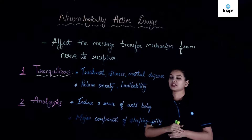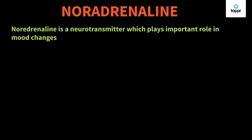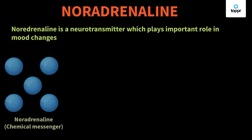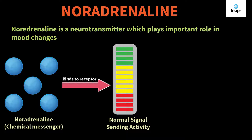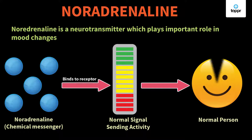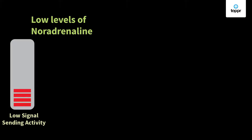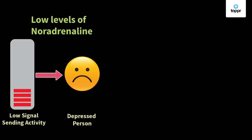Let's see how these tranquilizers work by discussing noradrenaline. Noradrenaline is a neurotransmitter which plays a very important role in mood changes. It acts as a chemical messenger — it binds to a receptor and shows signal-sending activity. Due to these signals, our mood remains normal. If the level of noradrenaline falls down, the signal-sending activity also lowers and the person suffers from depression.